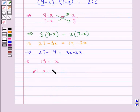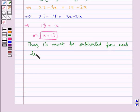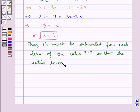Thus, we say 13 must be subtracted from each term of the ratio 9 is to 7 so that the ratio becomes 2 is to 3. The final answer is 13.